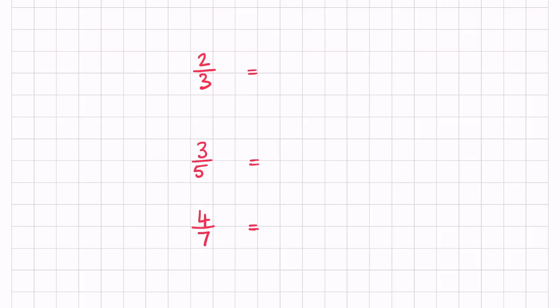So two thirds, we can multiply by 2, multiplied by 2, that gives us 4 over 6. Let's go ahead and find another equivalent fraction of two thirds. We can multiply by 3 times 3, the numerator and the denominator, that gives us 6 over 9.